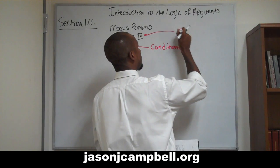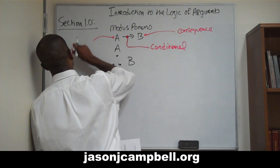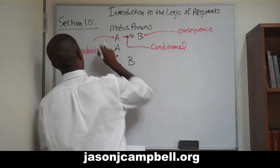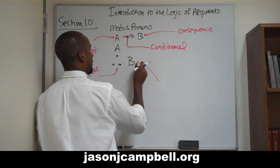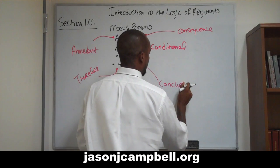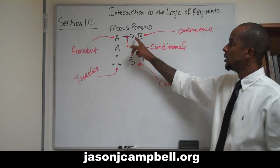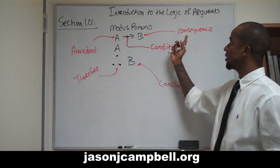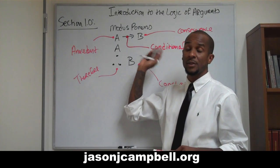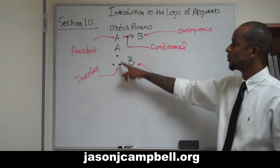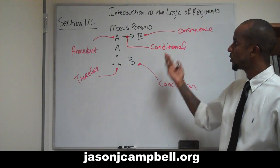The letter B is the consequence. The letter A is in the position of the antecedent. The three-dot triangle is 'therefore,' and this is our conclusion. So these are all of the parts of the conditional: the arrow is called a conditional; to the left of the conditional is called the antecedent; to the right of the conditional is called the consequence, meaning that the consequence is a result of whatever is on the left side of the arrow. The three dots in a triangle is 'therefore,' and whatever comes to the right of 'therefore' is your conclusion.